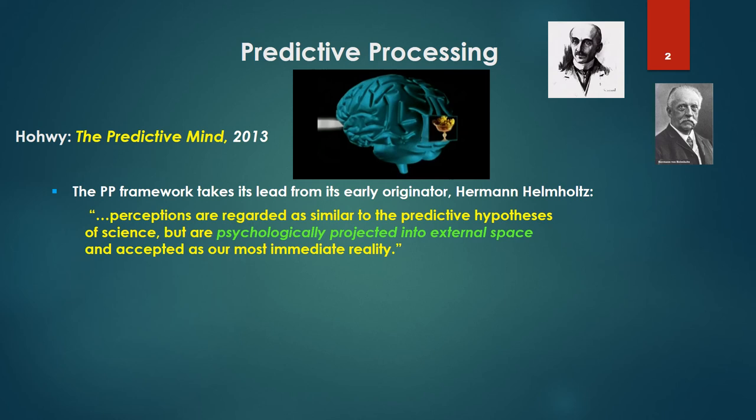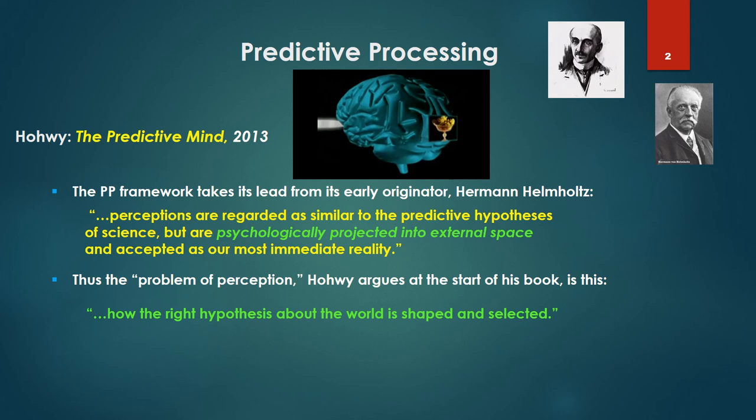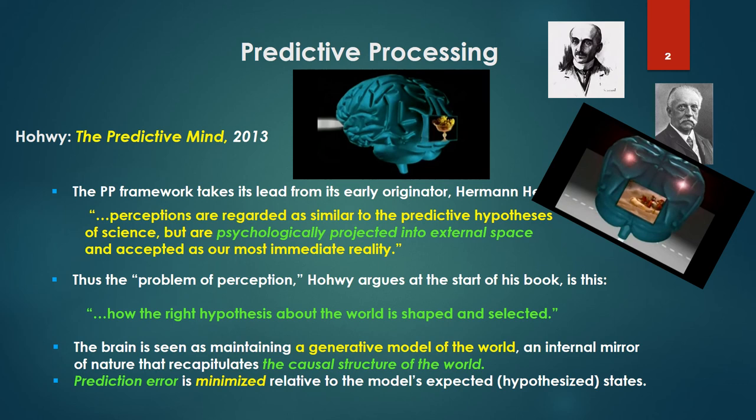So already we see an interesting phrase, psychologically projected into external space, and we're going to wonder what psychological projection means. Thus the problem of perception, Howey argues, at the start of his book is this: how the right hypothesis about the world is shaped and selected. So given the Helmholtz framework, we're reformulating hypotheses, we have to select the right hypothesis about the world if that's what we're going to perceive and perceive correctly. So the brain is seen as manipulating the generative model of the world, an internal mirror of nature that recapitulates the causal structure of the world.